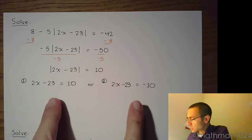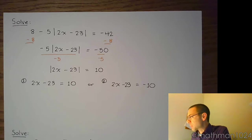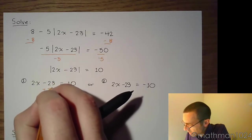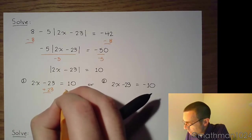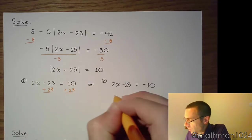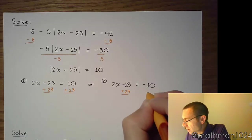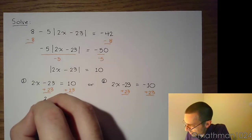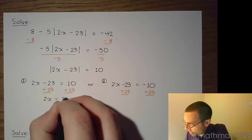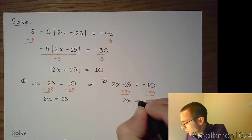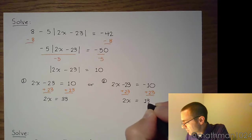Now that you have these two separate linear equations, you solve them like you always do. So add 23 on both sides here, which will coincidentally be the same step that you take for the other equation. So we have 2x is equal to 33, and then over here, 2x is equal to positive 13.